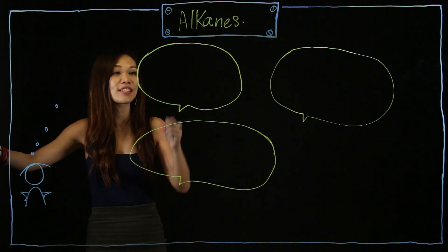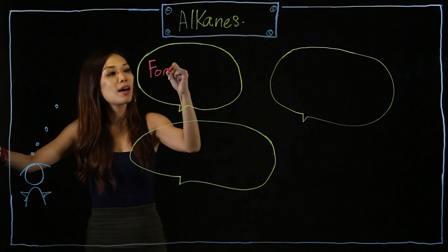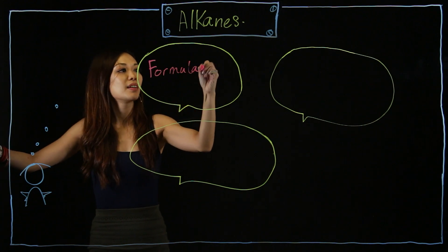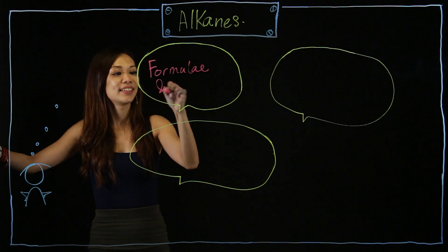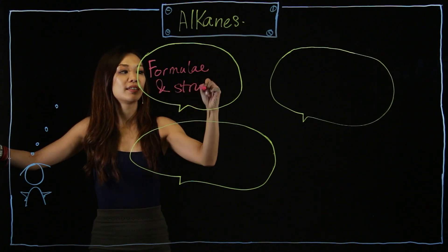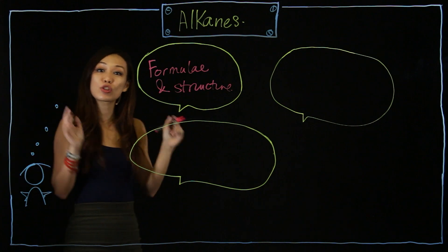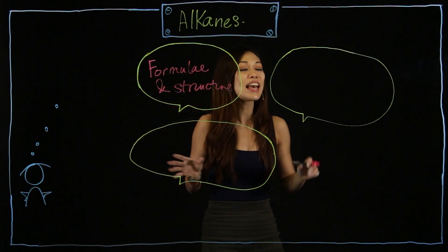What are the three? First, you must always remember their formula and structure. Formula of the alkanes and the structure, how do you draw them. Second, you need to know their physical properties.